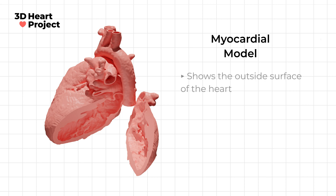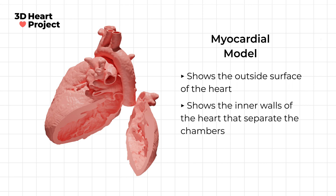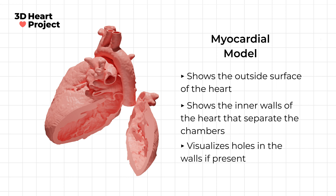This type of model shows the surface of the outside of the heart. If cut open, this type of model can also show the inner walls of the heart that separate the chambers, and can be used to show if there are holes in these inner walls that lead to connections between the chambers.